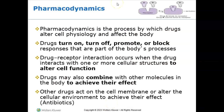So to summarize: pharmacokinetics is what does the body do to the drug — absorption, distribution, metabolism, excretion. Pharmacodynamics is what does the drug do to the body. Drugs can turn on, turn off, promote, or block responses that are part of the body's normal processes. A cell has a receptor site, and a medication will either block that receptor, fit into it, or open it — altering the cell function so the drug can do what it's supposed to.